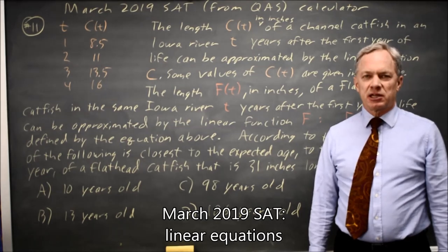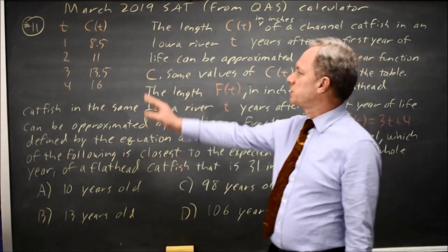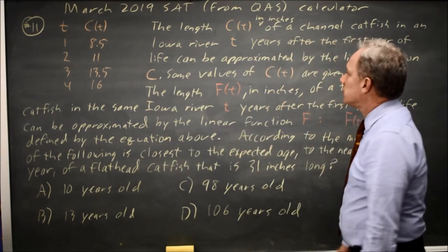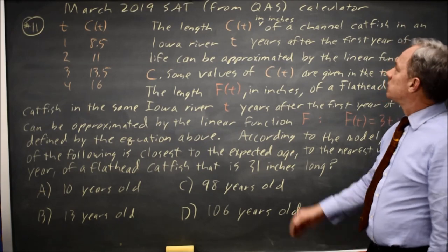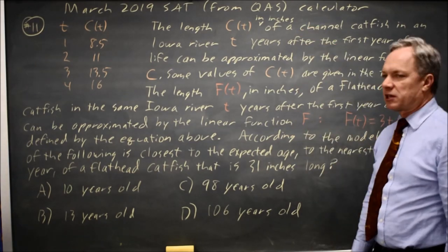This is calculator question number 11 from the March 2019 SAT. College Board gives us both a table and a function describing the lengths of channel catfish and flathead catfish in an Iowa river.